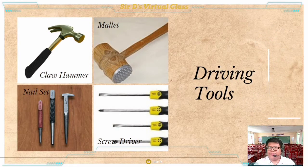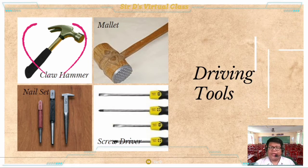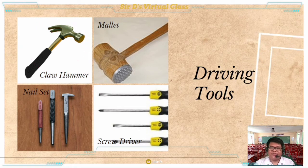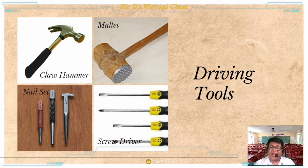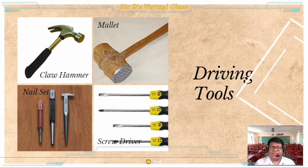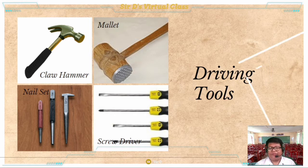The last group of tools is the driving tools, which includes the claw hammer, used to drive and pull out nails on wooden surfaces; the mallet, made of wood or rubber, used to drive other tools like the chisel; the nail set, used to set the head of a finished nail below the surface; and the screwdriver, used to drive and loosen screws.